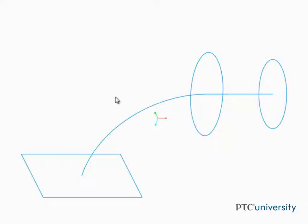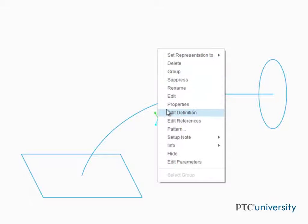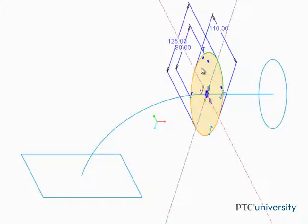As you can see, we have three sections and a trajectory ready to go already. Notice that we've also divided the circular sections into four segments to match the four segments of the rectangular section.